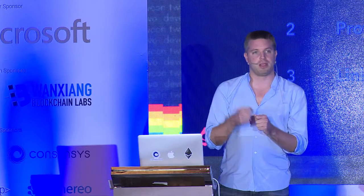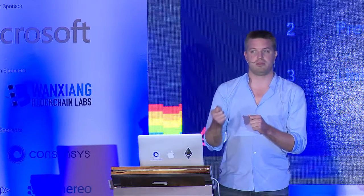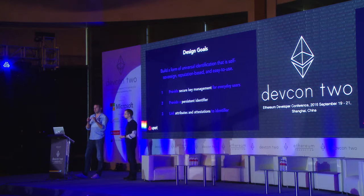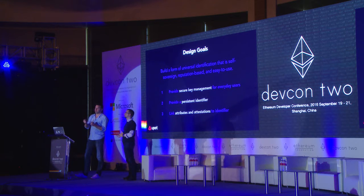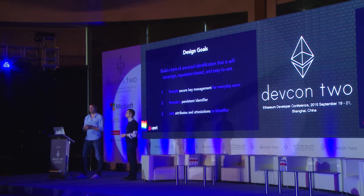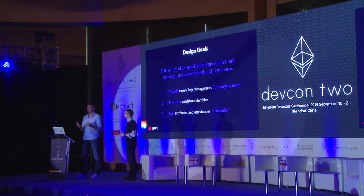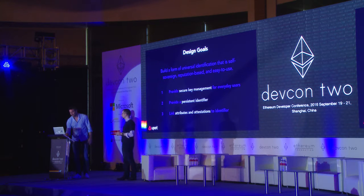Attestations and attributes are a key element to this. Once you have an identifier, you can claim certain attributes and get attestations from institutions — whether it's a bank, an employer, your landlord, whatever it is. Over time you build more and more elements connected to your identity, which you can then share selectively with relevant parties and build up a really strong reputation and the trust you need to interact with digital services. Christian will now tell you how we solved it.